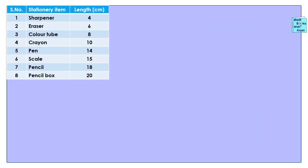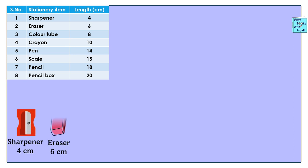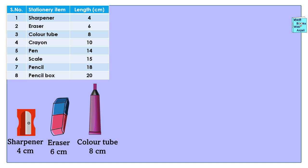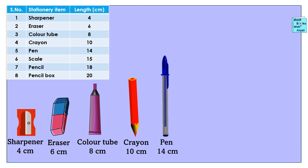Using this table, we will arrange various stationery items in ascending order. First, the shortest sharpener — we will place it at the leftmost side. Followed by eraser 6 cm. Then color tube 8 cm. Next comes crayon 10 cm, followed by pen 14 cm.